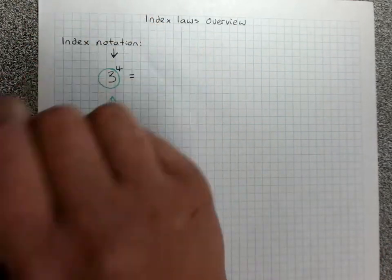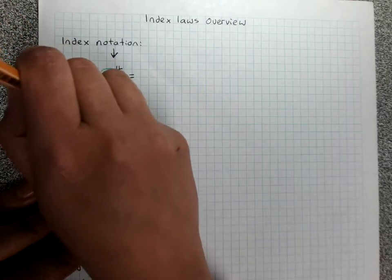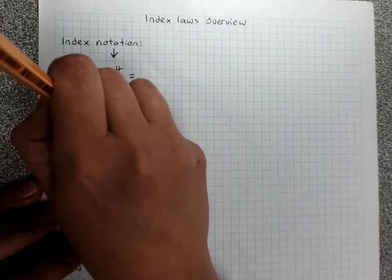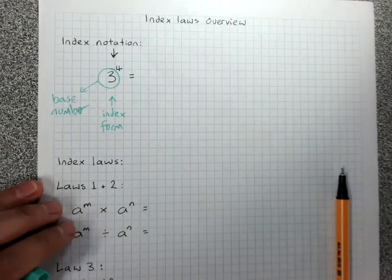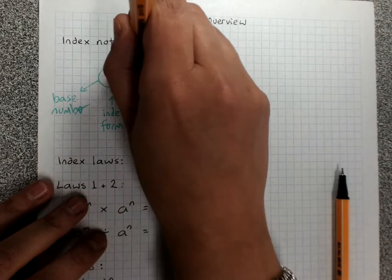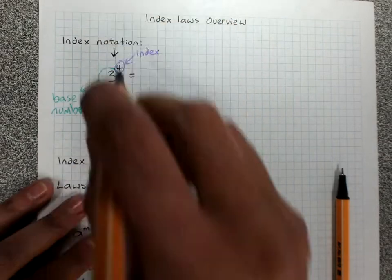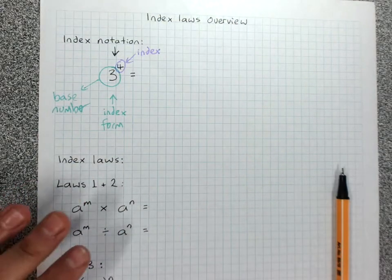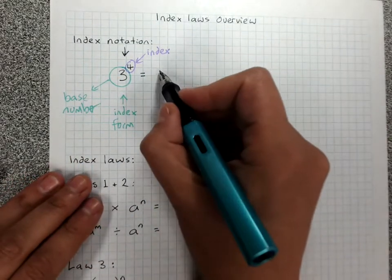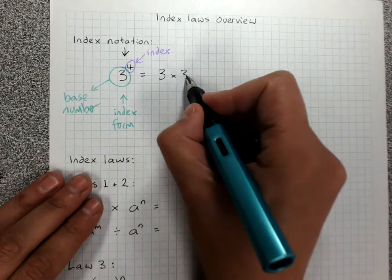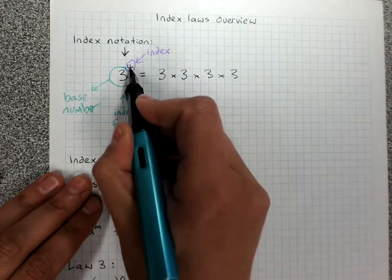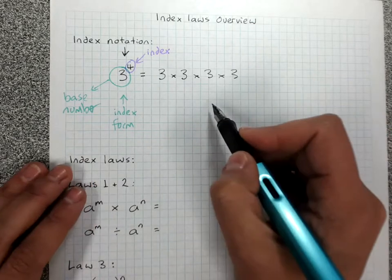The big number or letter is the base number, and the little number is the index, although some people will call it a power. So this is 3 to the power of 4, which means 3 times 3 times 3 times 3 — four 3s all multiplied together.